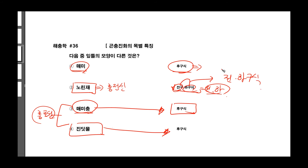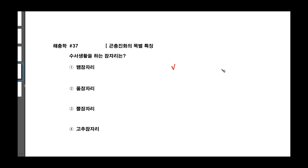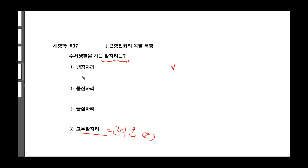메미도 역시 후구식이다 라는 것. 수서 생활을 하는 잠자리는 하고 물어봤어요. 잠자리에는 고시군과 신시군이 있었죠. 그 중에서 풀잠자리, 고추잠자리, 뱀잠자리가 있는데, 고추잠자리는 고시군이고 답은 1번이 되겠습니다.